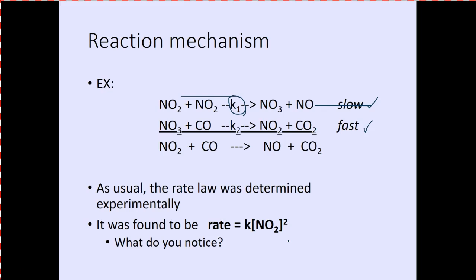Two elementary steps, therefore second order. The slow step has no CO in it at all — and look at the rate law: there's no CO in the rate law either. That tells us CO is zero order, which means as long as it's there, it doesn't matter. The only thing that determines this rate is NO2.